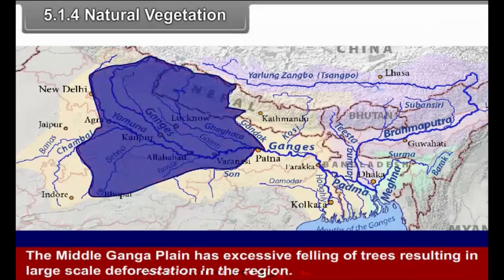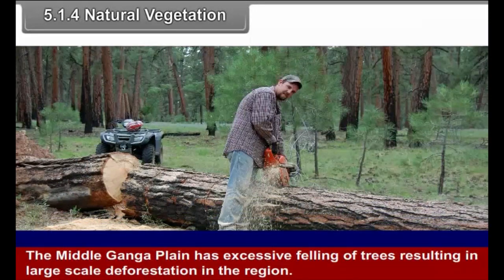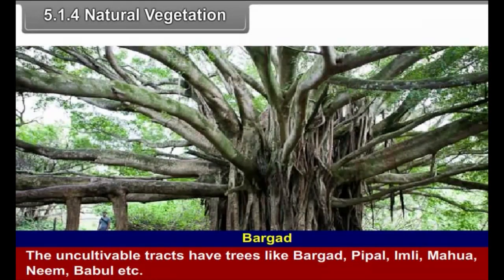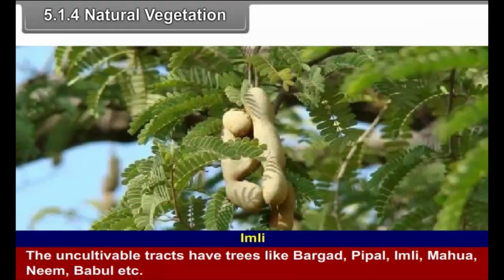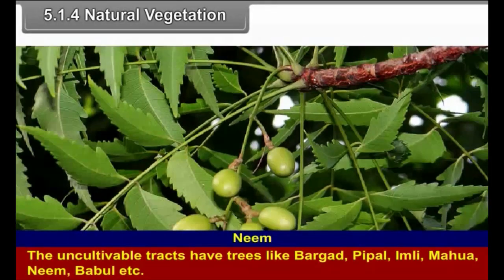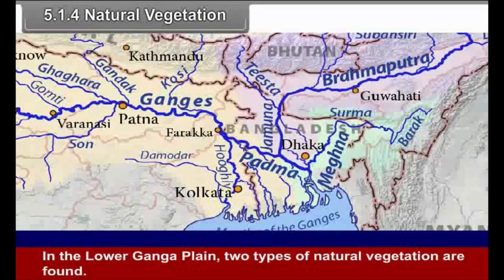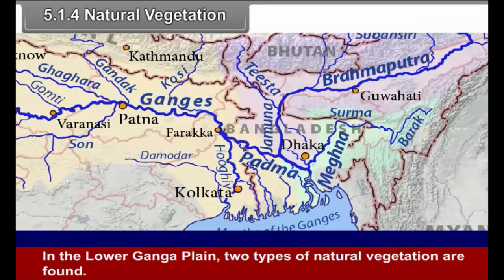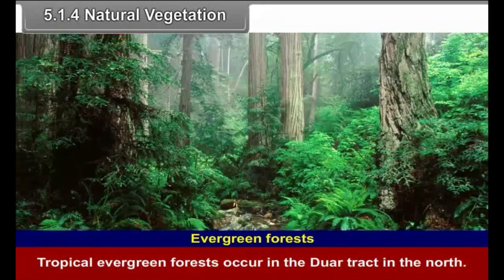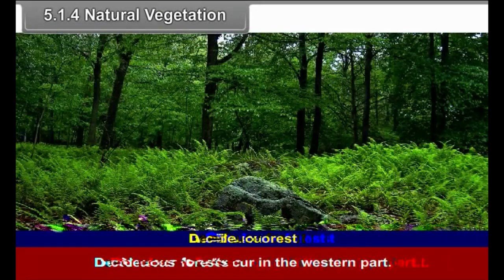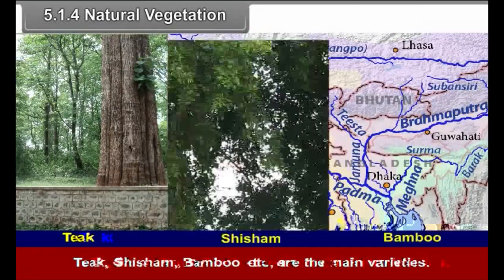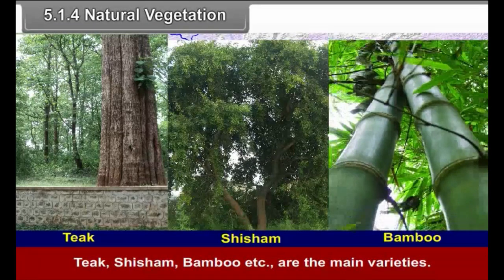The middle Ganga Plain has seen excessive felling of trees resulting in large-scale deforestation. The uncultivable tracts have trees like Bargad, Pipal, Imli, Mahua, Neem, Babul, etc. In the lower Ganga Plain, two types of natural vegetation are found. Tropical evergreen forests occur in the Dwar tract in the north, with Sal and Shisham as dominant varieties. Deciduous forests occur in the western part, with Teak, Shisham, Bamboo, etc. as the main varieties.